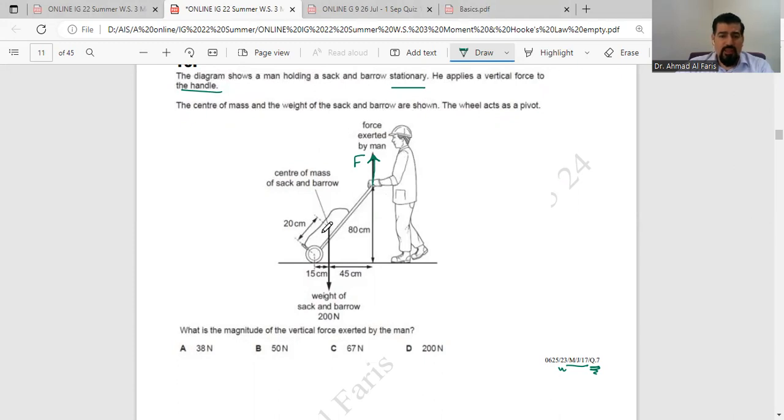So we have a vertical force, this is F of the man. The center of the mass and the weight of the sack and barrow are shown. This is what we have, and this is the center of it, acts downwards, and it's 200 Newton. The wheel acts as a pivot, so this is the pivot that we have here.